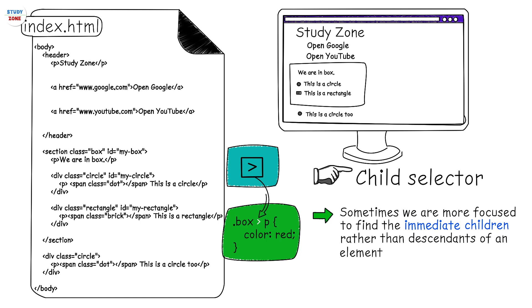This will only change the color of p tag which has the text 'we are in box' because this p tag is the only immediate child of box.